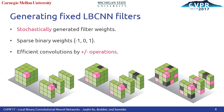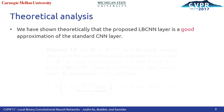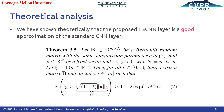The fixed LBC filters are stochastically generated with sparse binary weights. The convolution can be extremely efficient using addition and subtraction operations. We have shown theoretically that the proposed LBCNN layer is a good approximation of the standard CNN layer, and this is also empirically verified.